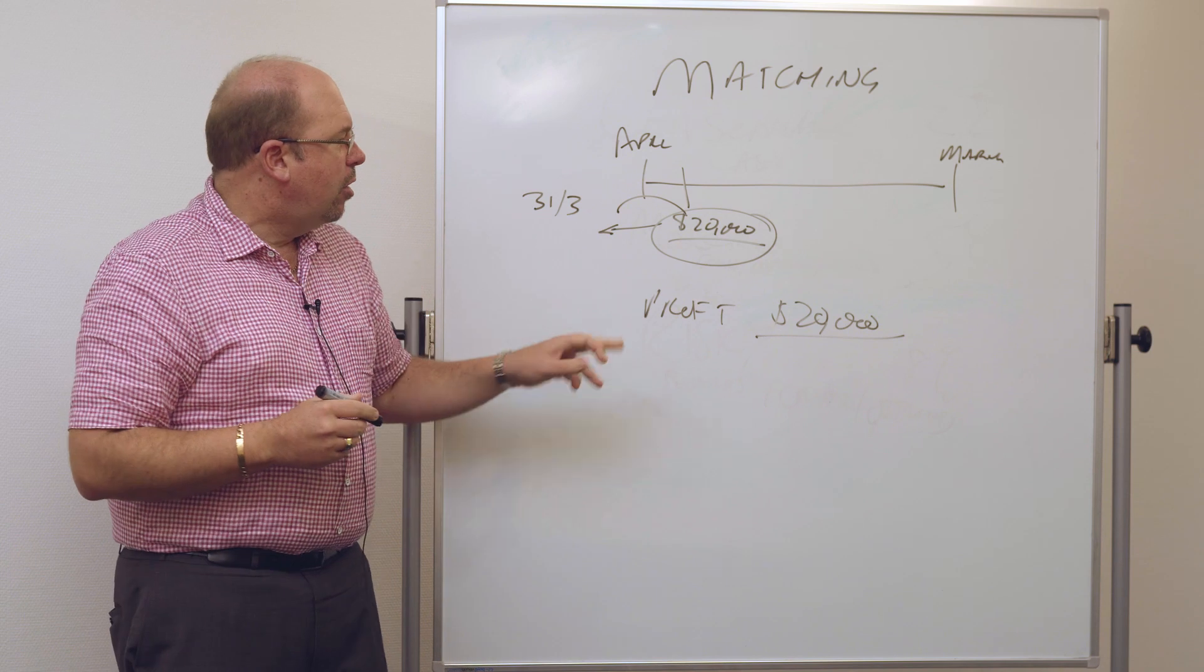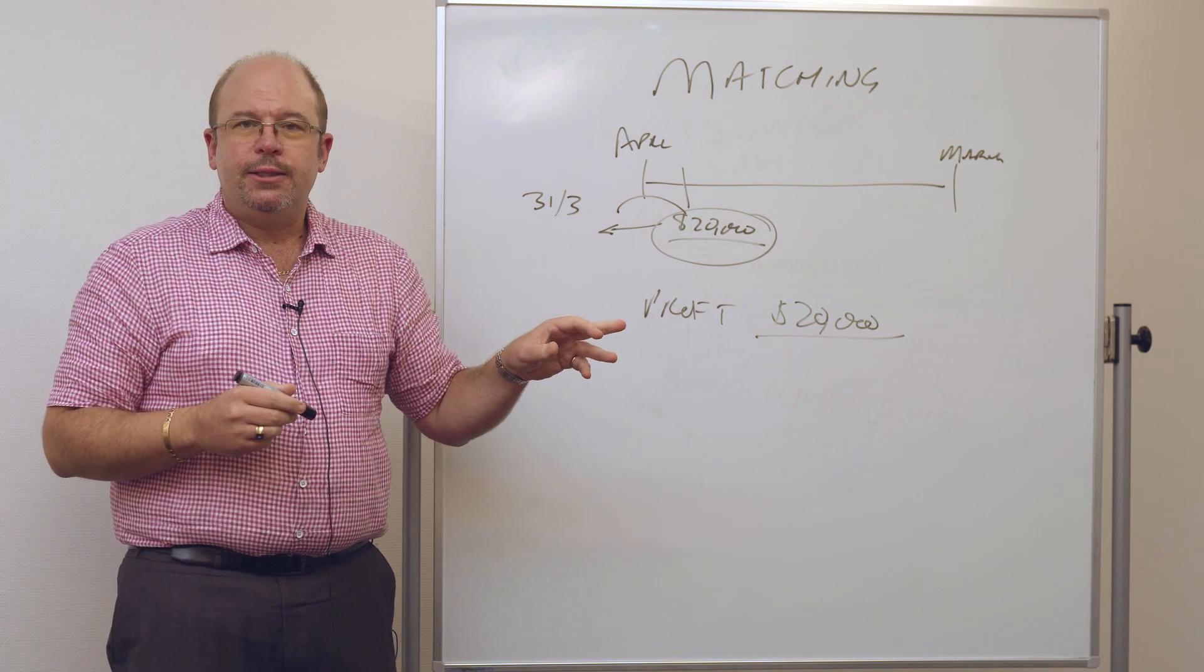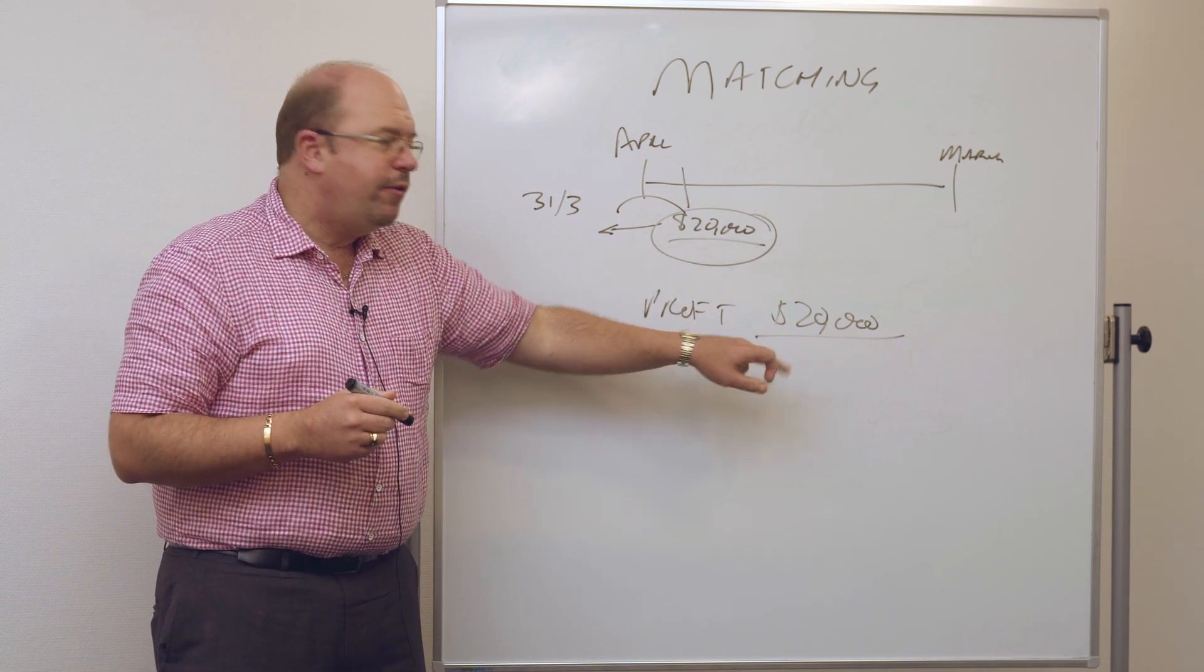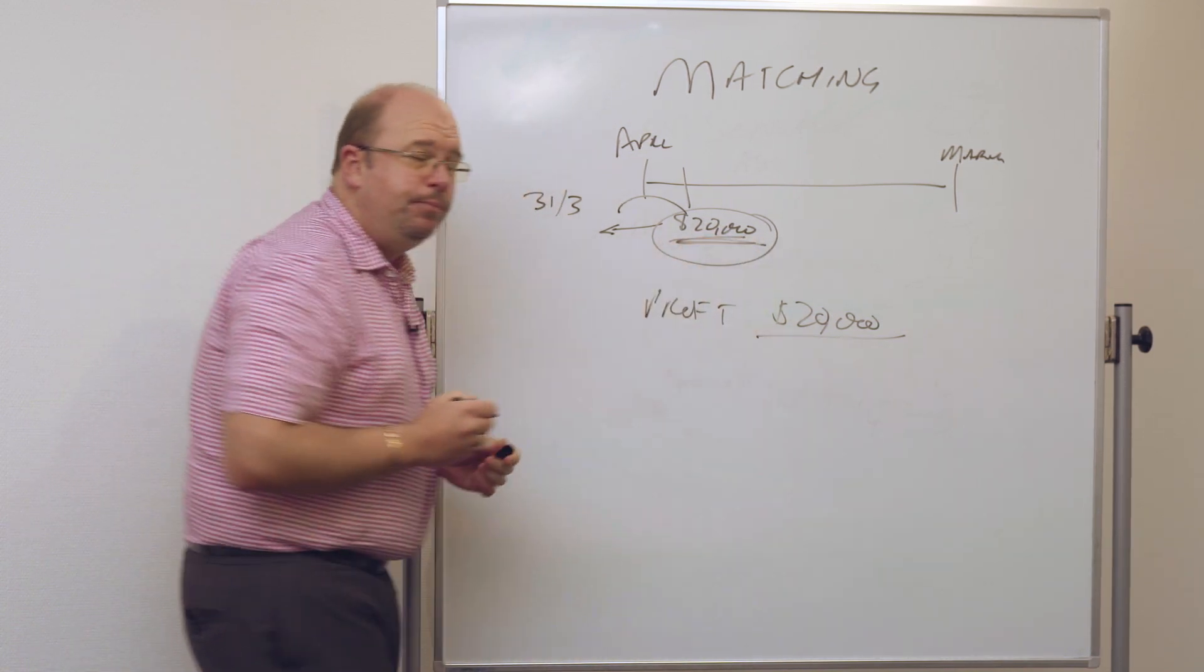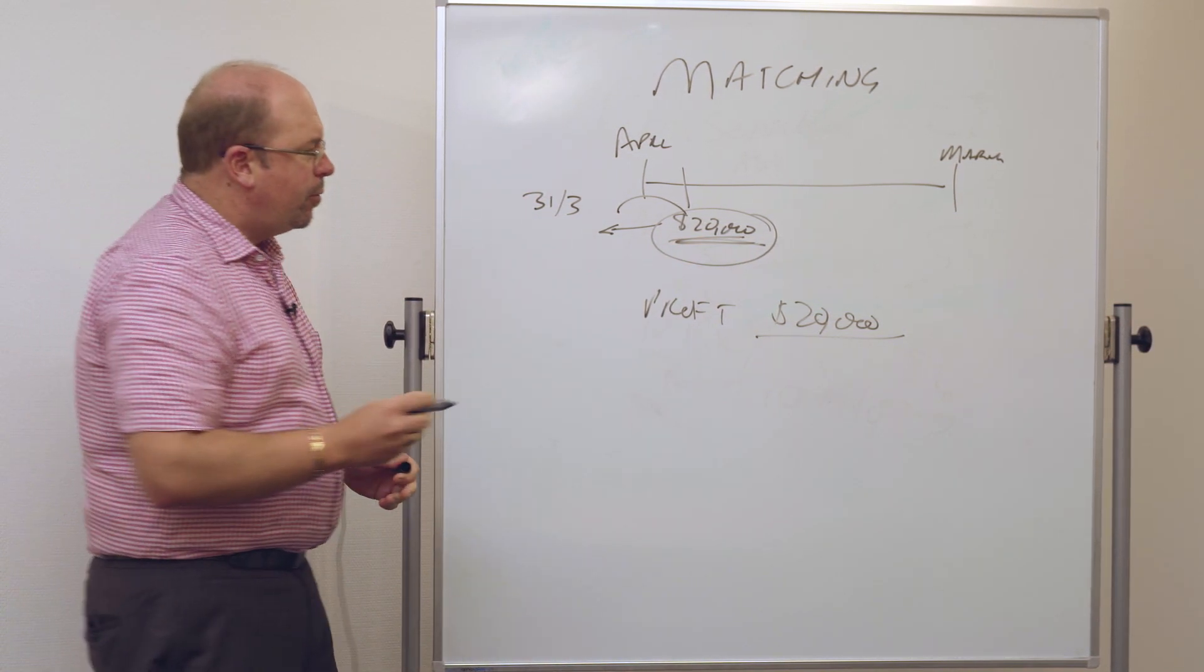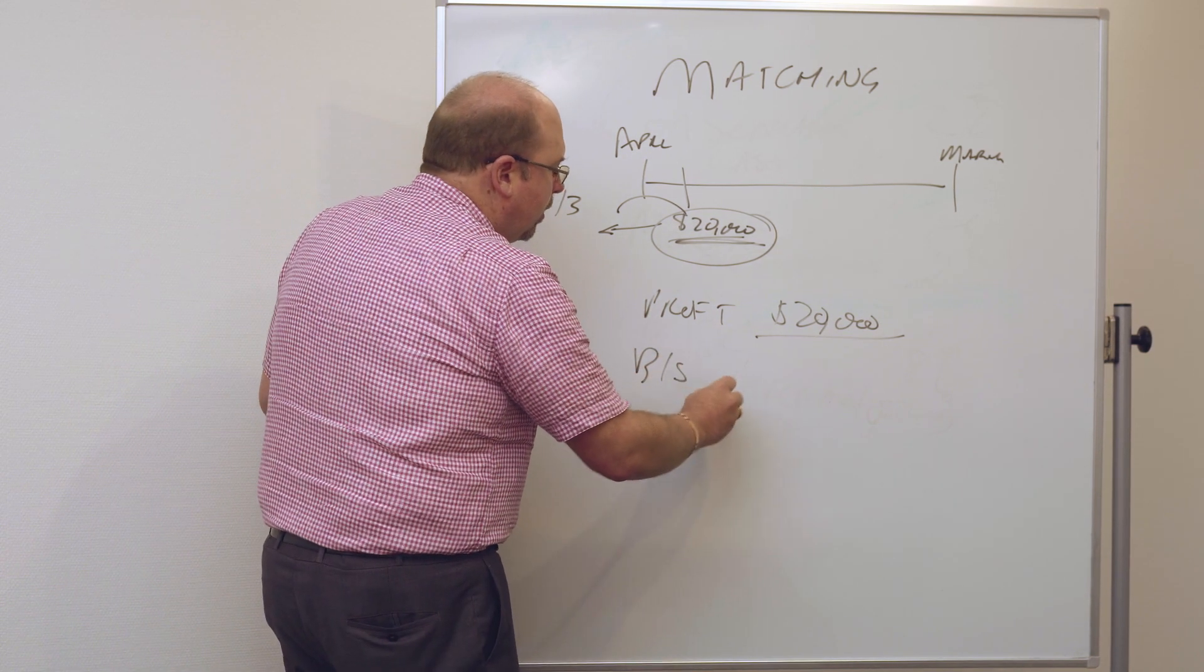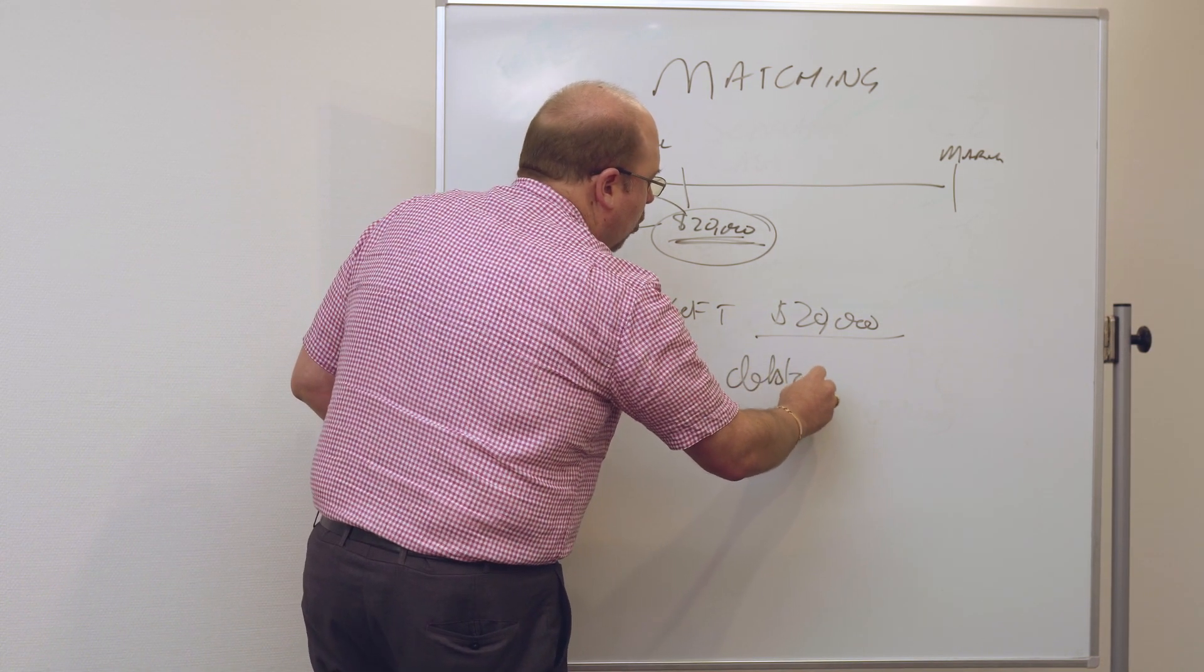Well, this is often tied up in the accrual base. So in this case, our profit for $20,000 is sitting here in April. And this is normally represented in the balance sheet as a debtor or accounts receivable.